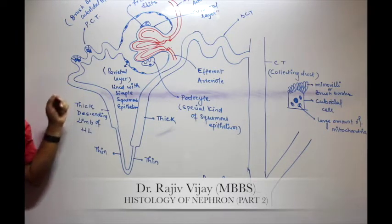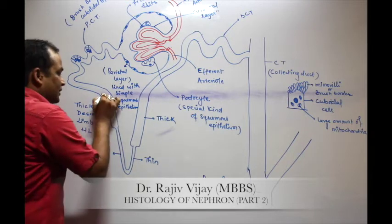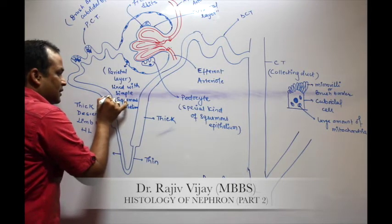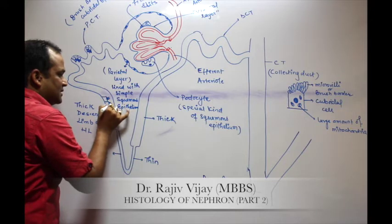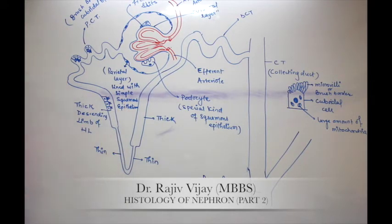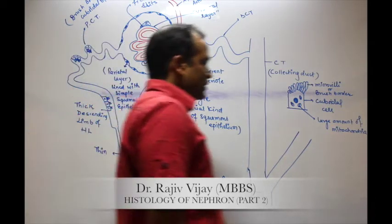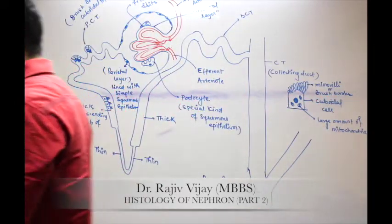After the PCT, its continuation is the thick descending limb of the loop of Henle. It is also lined with cuboidal epithelium, the only difference being that the number of brush borders is less.